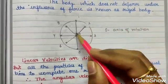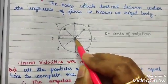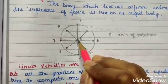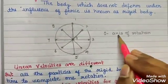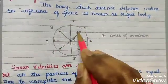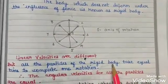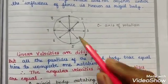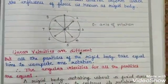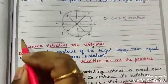If we have a rotating body, we have one center - one axis of rotation. The size or length of the body may vary, but there is one center point as the axis of rotation. Linear velocities are different for particles in the body, but all particles of the rigid body take equal time to complete one rotation - so angular velocities for all particles are equal.